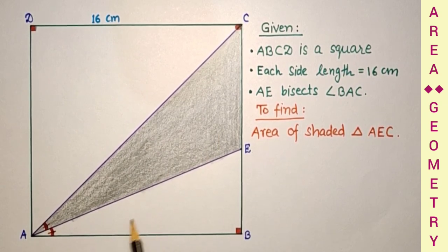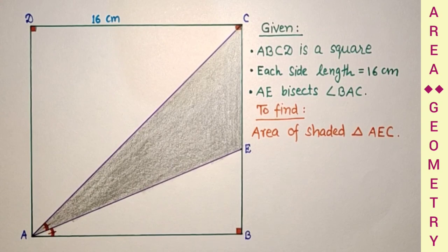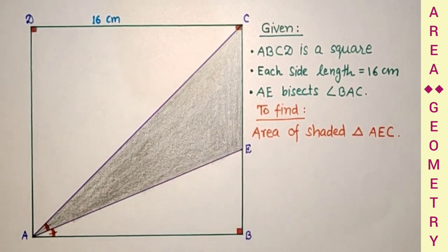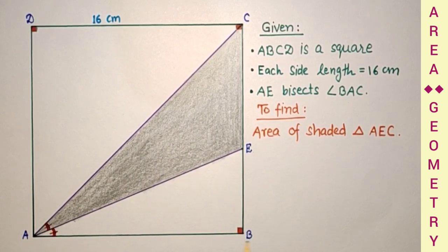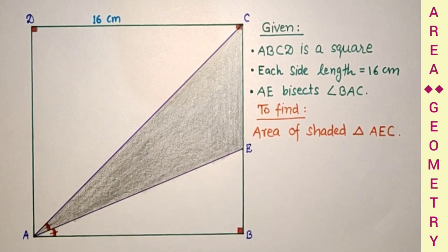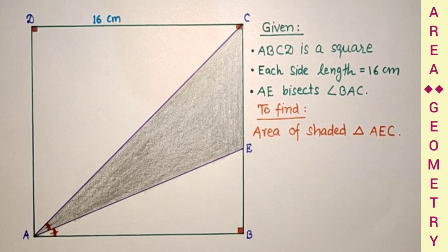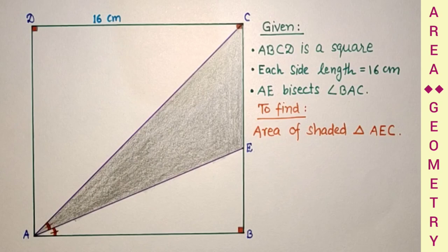We know that the diagonal of a square equals side root 2. So if AB is X then all the sides will be X and the diagonal will be X root 2. So here side is 16 cm, therefore diagonal AC will be 16 root 2 cm.